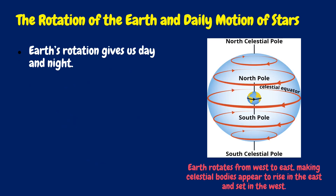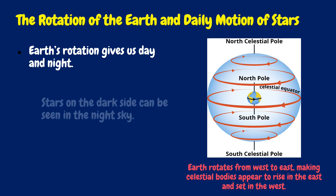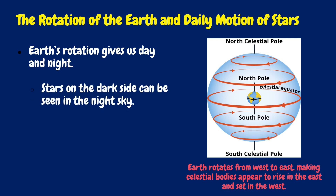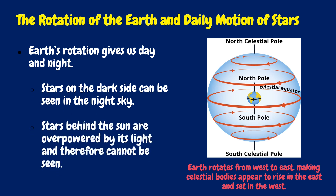Earth's rotation gives us day and night. Diurnal motion is the daily motion of stars and other celestial bodies across the sky. This motion is due to the Earth's rotation from west to east, which causes celestial bodies to have an apparent motion from east to west. Stars on the dark side can be seen in the night sky, while stars behind the sun are overpowered by its light and therefore cannot be seen.